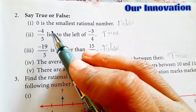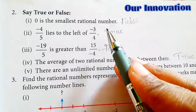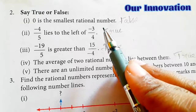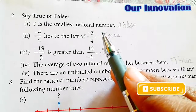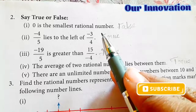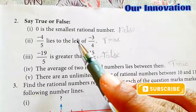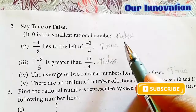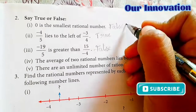Next: say true or false. '0 is the smallest rational number.' 0 is the smallest rational number? No — negative numbers are there. So 0 is not the smallest rational number. So: false.